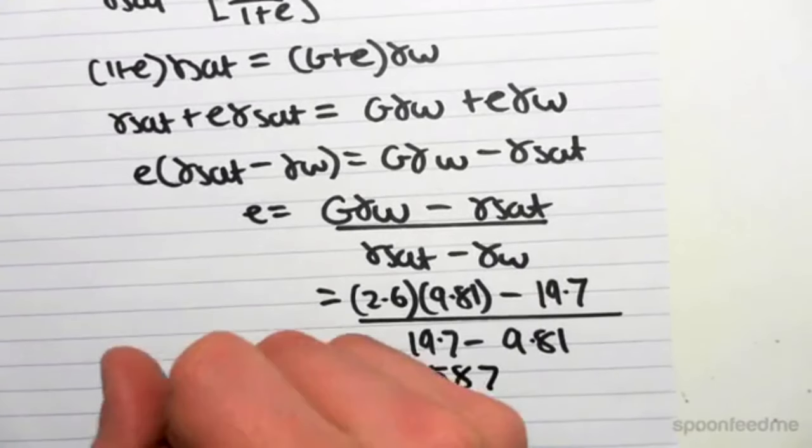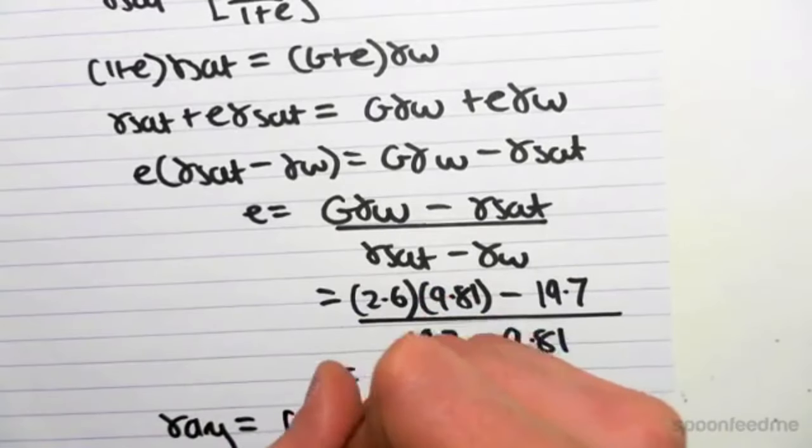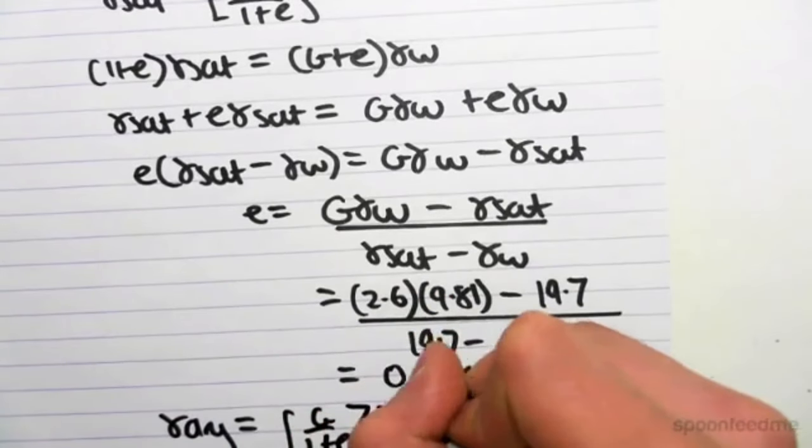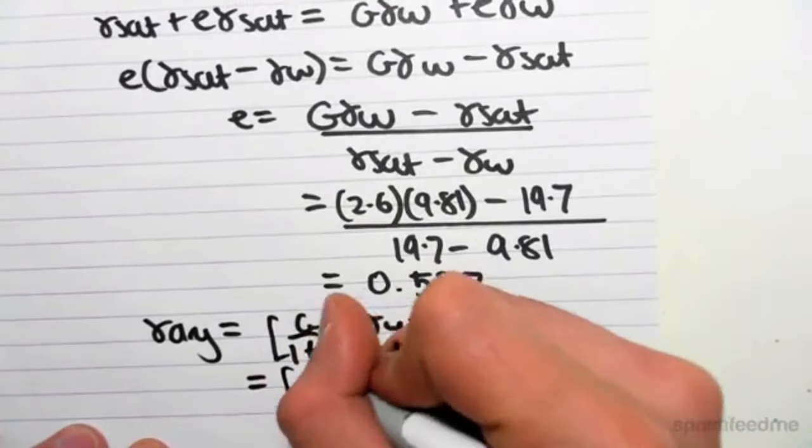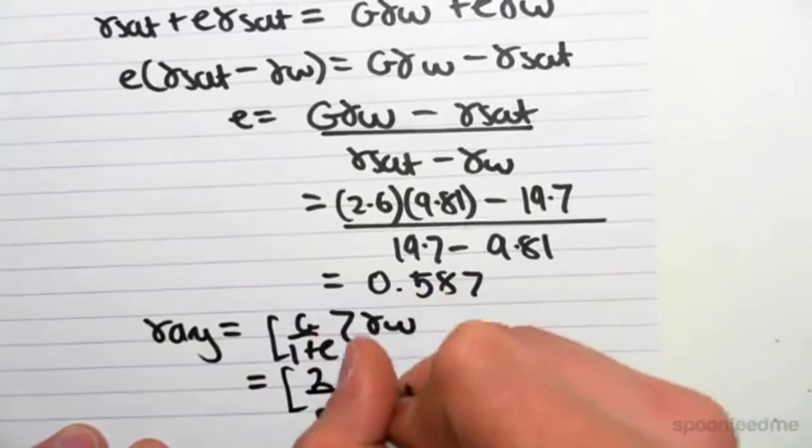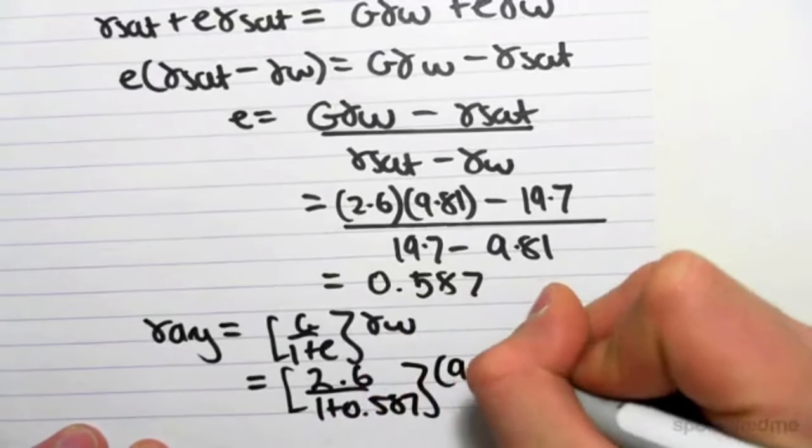We get 0.587, and then we can find our gamma dry, which is G over 1 plus E times gamma W. So gamma dry will be 2.6 over 1 plus 0.587 times 9.81.